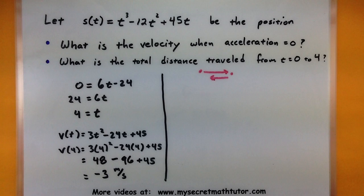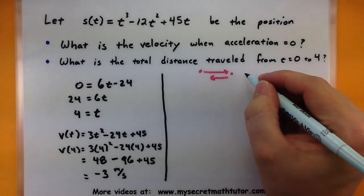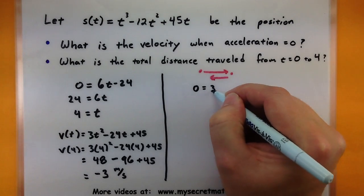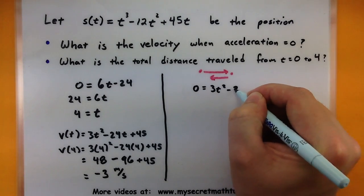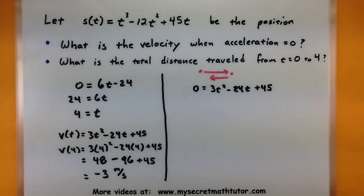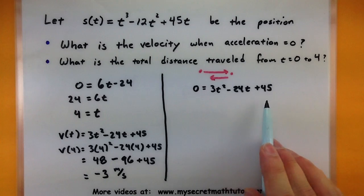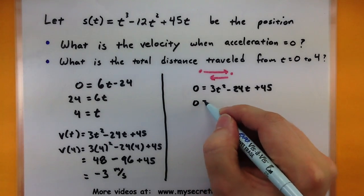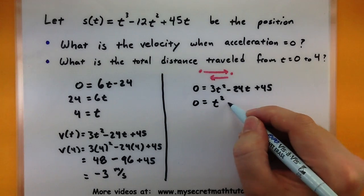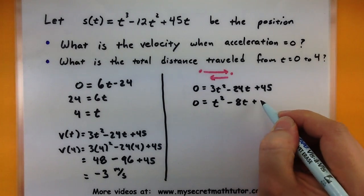Because if it does change directions, then I want to check the distance from that point to where it changes direction, and from where it changes direction to the end. And one way we can see where it changes direction is by looking at its velocity and where it is equal to zero. So let's go ahead and borrow our velocity and set it equal to zero. So 0 = 3t² - 24t + 45.